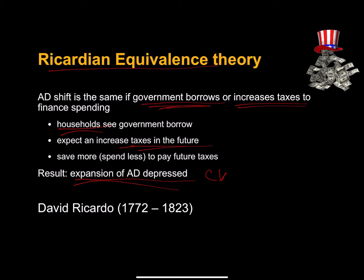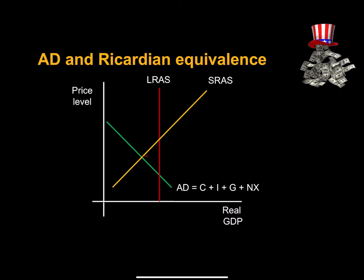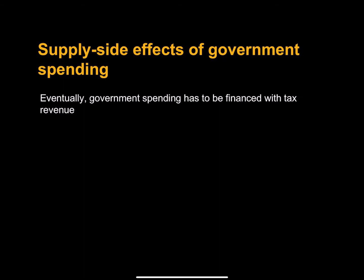So our consumption decreases even as government purchases increase. Without Ricardian equivalence, we might see an optimistic increase in aggregate demand as government spending rises. But unfortunately, consumption decreases as households prepare to pay those higher future taxes.